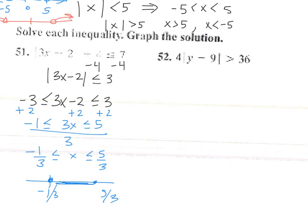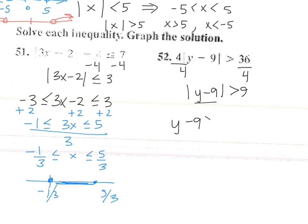For problem 52, a common mistake is to distribute, but you need to get the absolute value by itself first. Since it's 4 times the absolute value quantity, divide both sides by 4. This is a greater than case, so set up: y minus 9 greater than 9 or y minus 9 less than negative 9. Solving gives y greater than 18 or y less than 0.